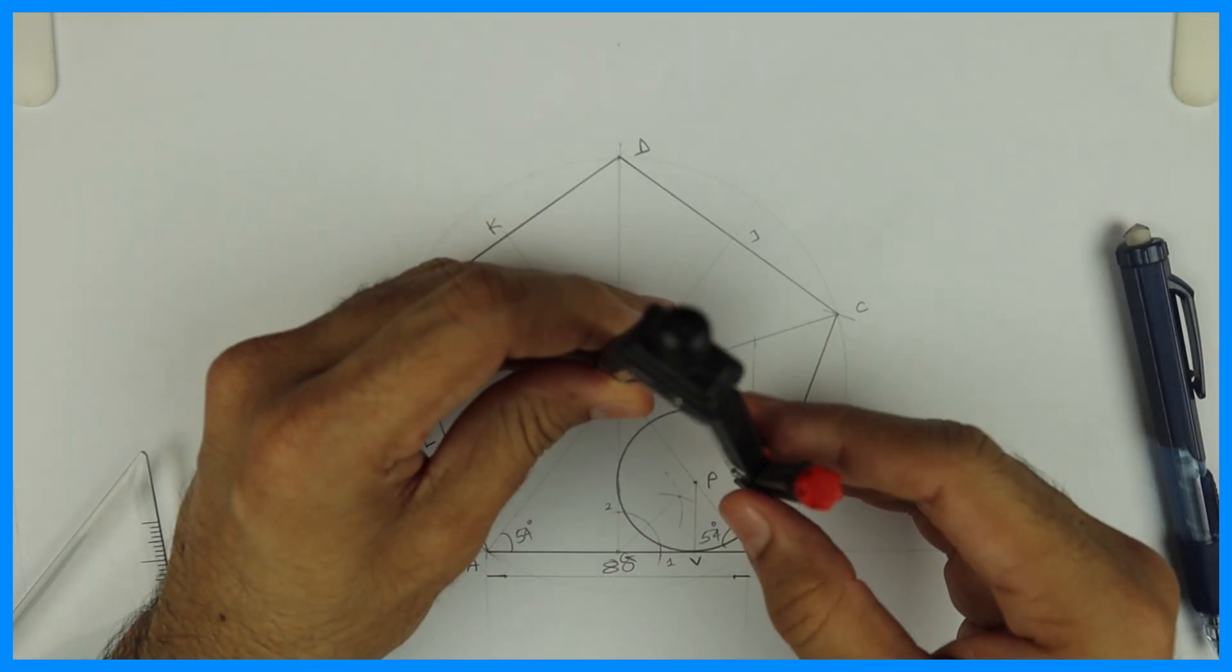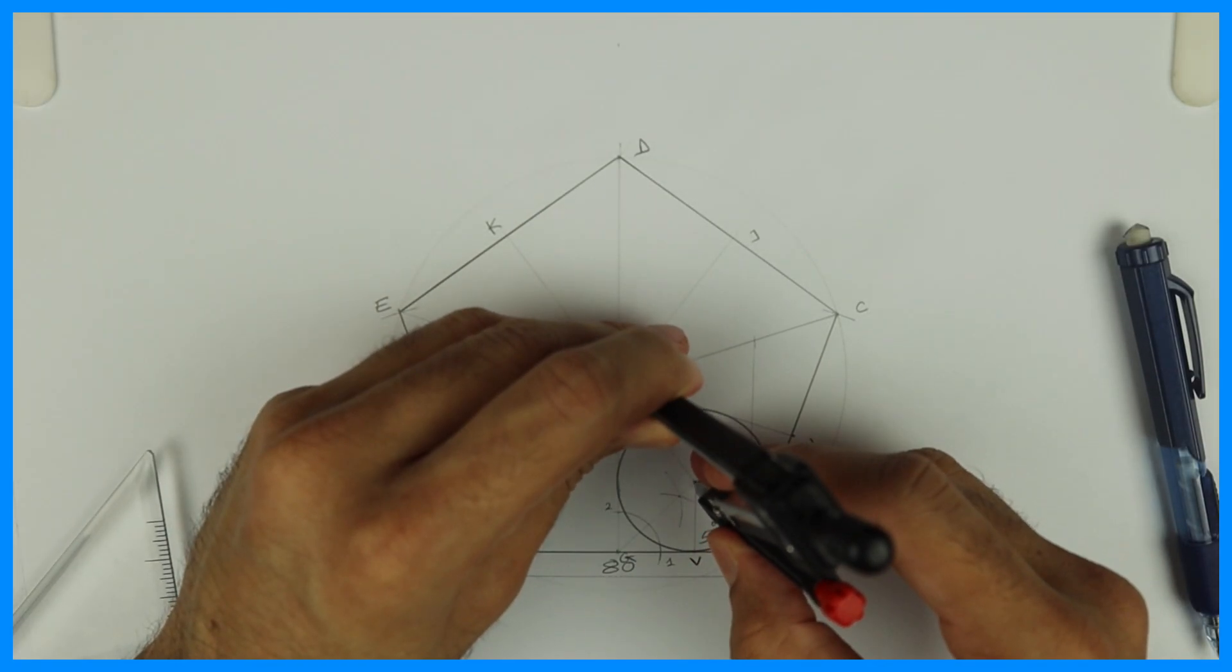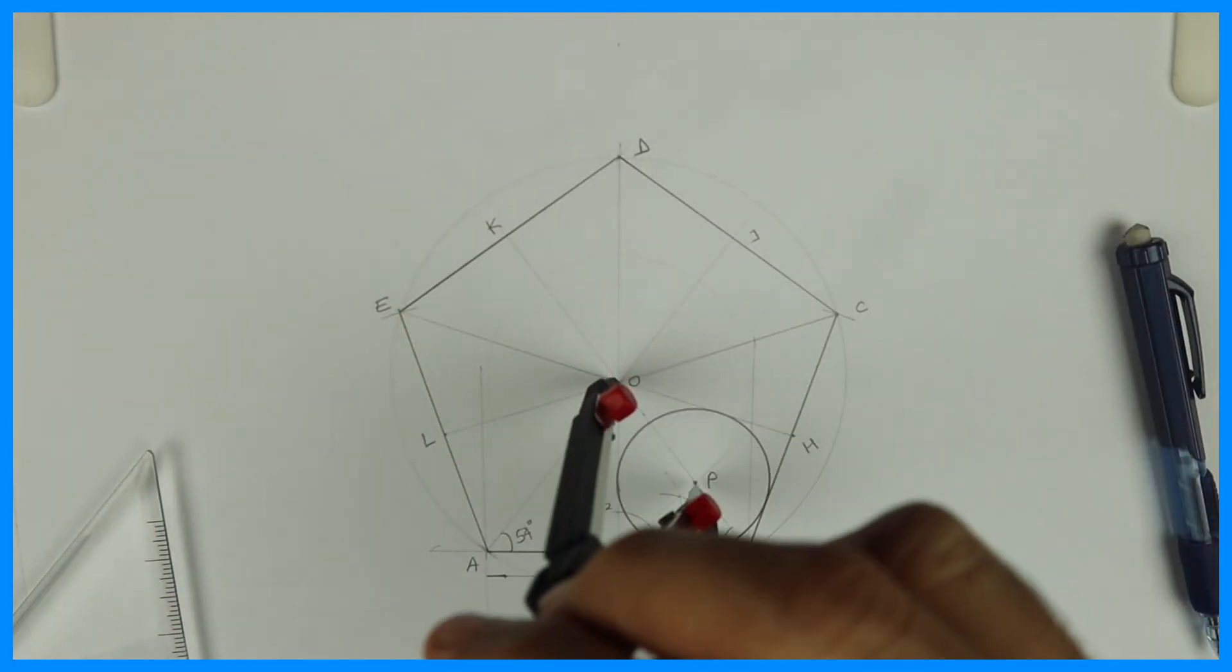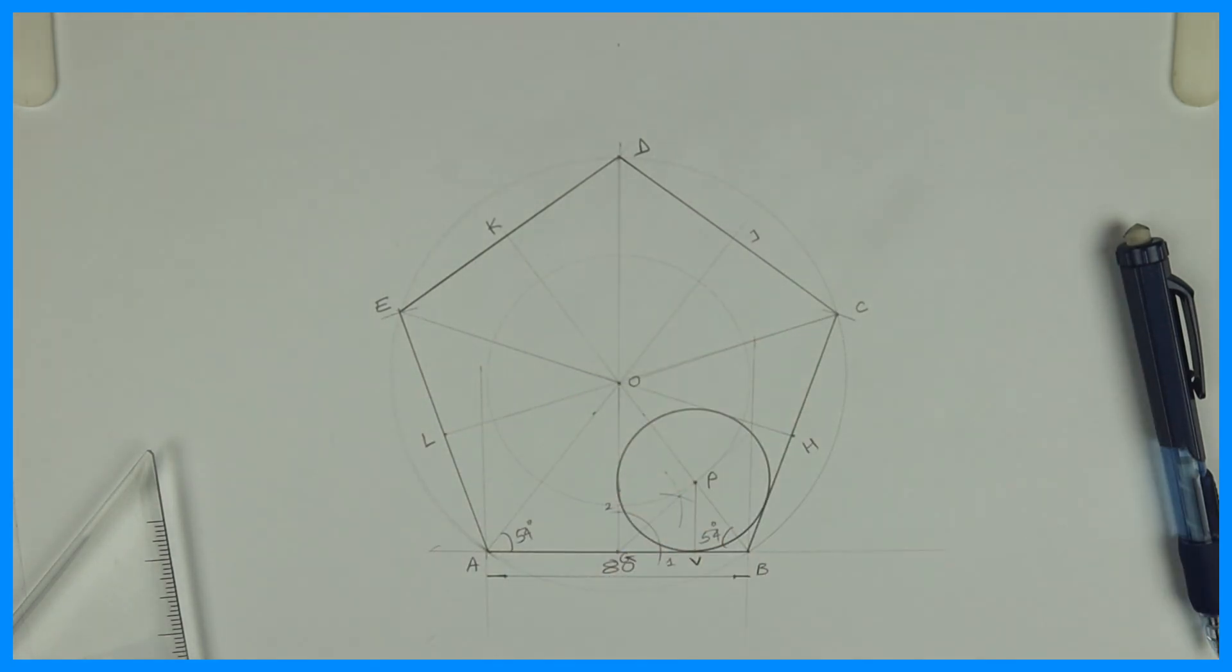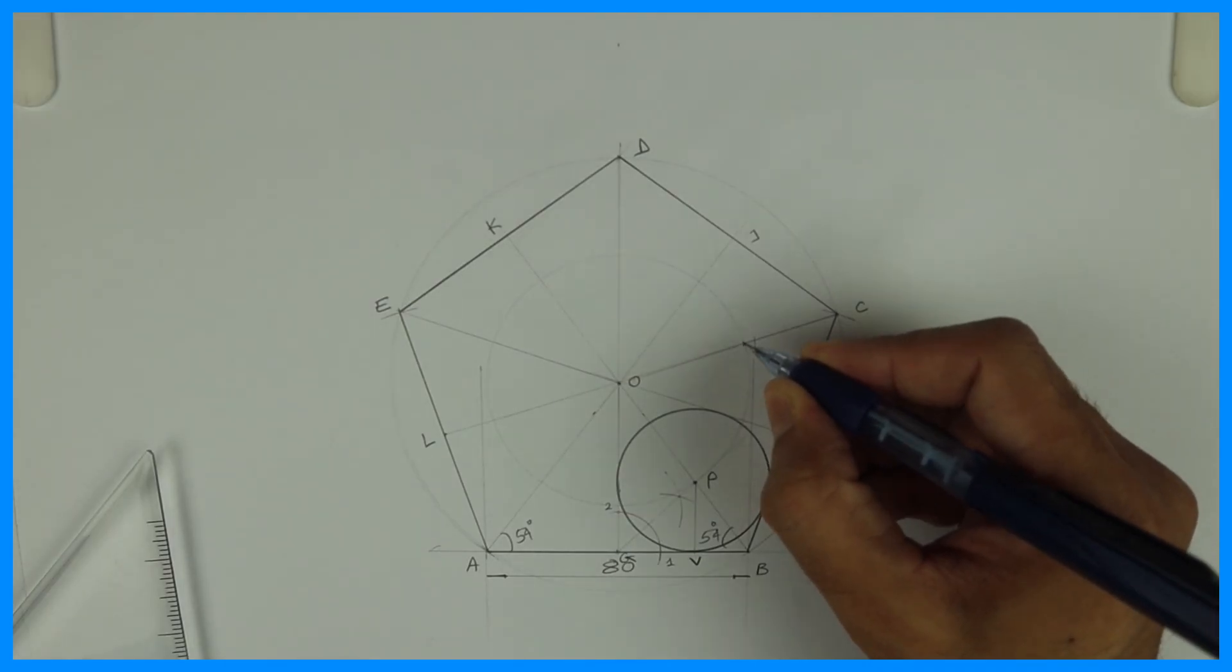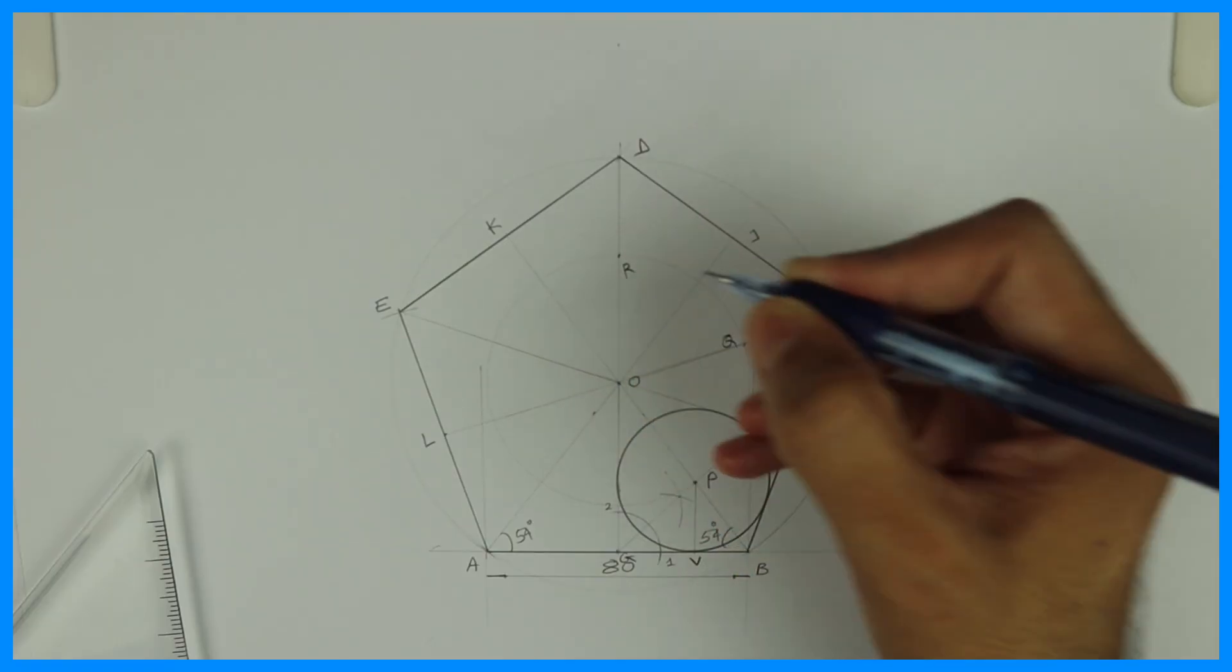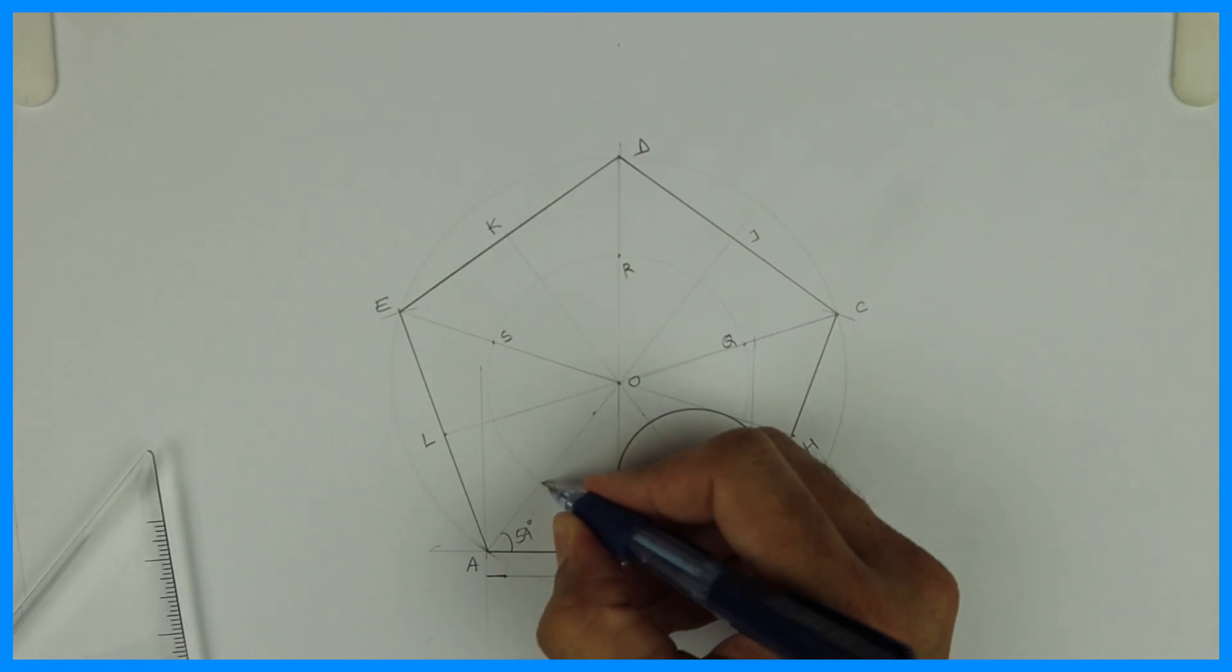After drawing that circle, you take O to P and draw circle from Q, R, S, and T.